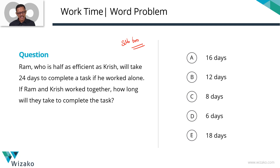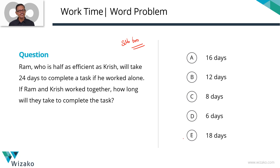Ram, who is half as efficient as Krish, will take 24 days to complete a task if he worked alone. They've given us the efficiencies of Ram and Krish. If Ram and Krish work together, how long will they take to complete the task?